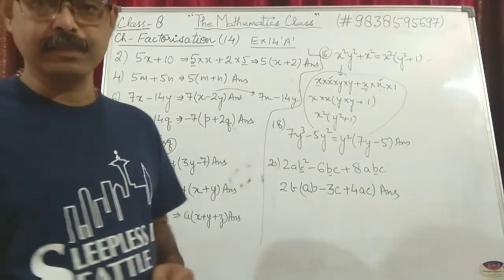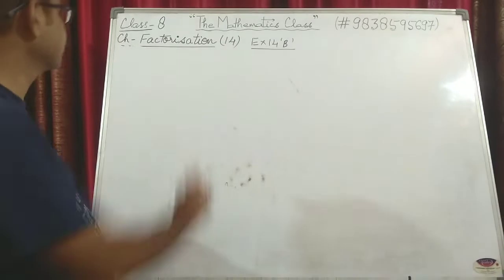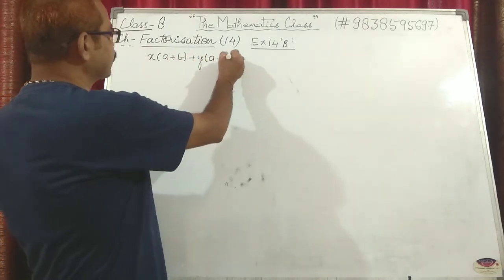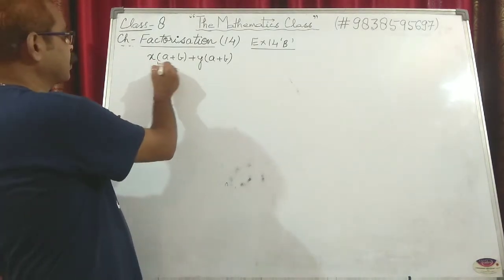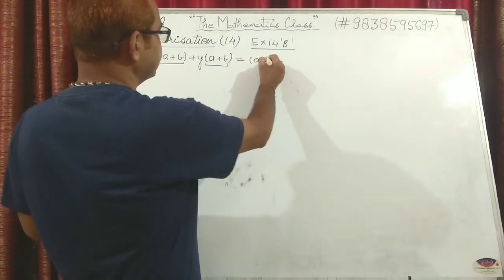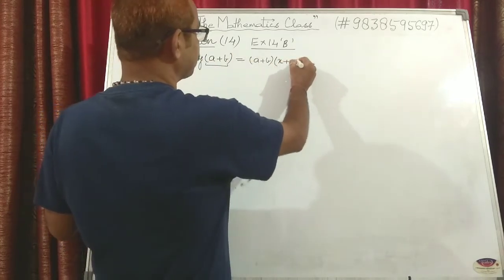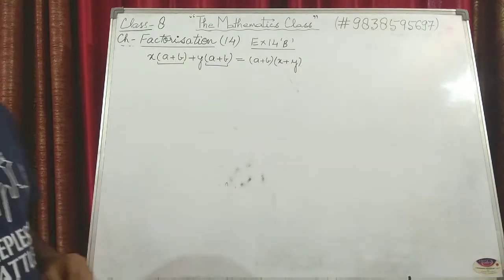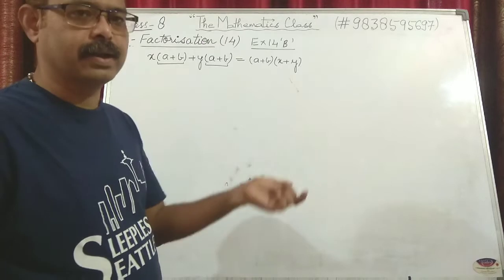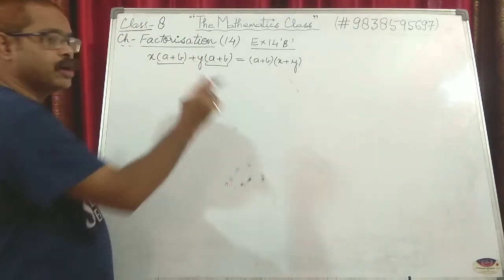Now this finishes exercise 14a. We move on to the second exercise, 14b. This exercise deals with when the common factor is a polynomial. For example, x(a+b) + y(a+b) — the polynomial (a+b) is common in both terms. We take (a+b) outside the bracket. What is left? x plus y. In this exercise we deal with polynomials as common factors, whereas in 14a only single numerical or algebraic terms were common.